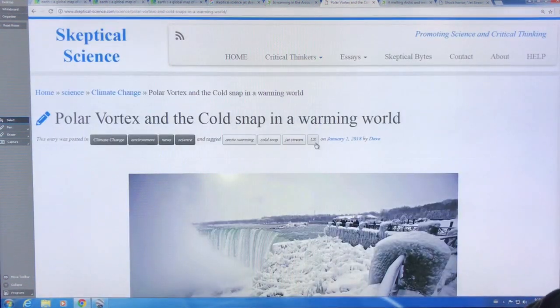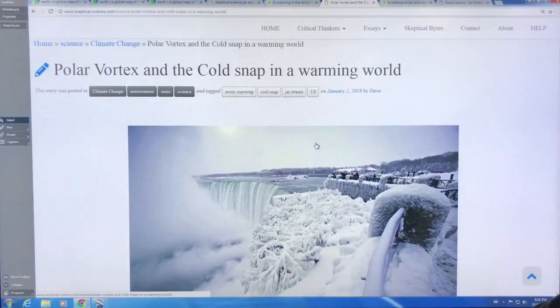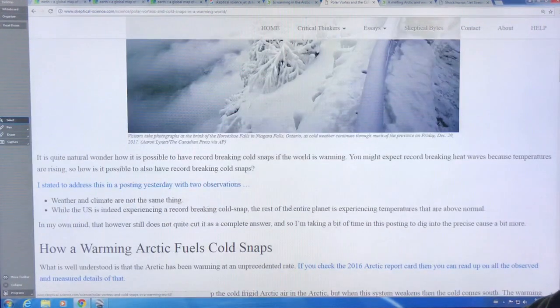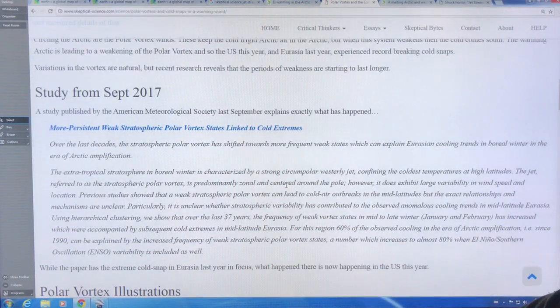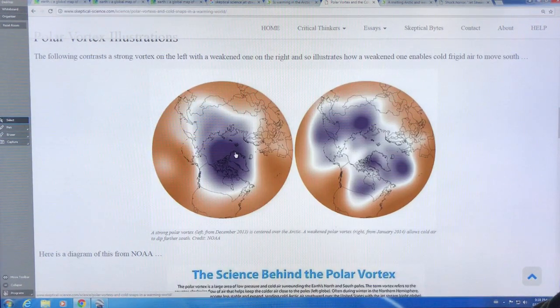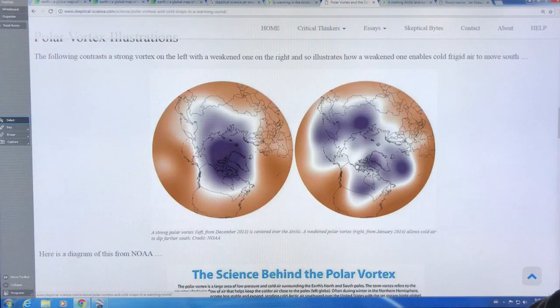So this is a good article - polar vortex and the cold snap in a warming world. This was posted, I believe, yeah, January 2nd, the beginning of the year. So much the same thing. This is a normal situation with the polar vortex or the jet streams, depending on the altitude you're looking at. What happened is when you get these incursions of very warm air coming in, slicing in, these ridges coming deep in, it shatters the polar vortex like this.